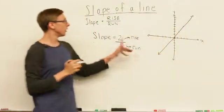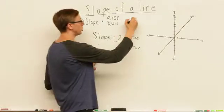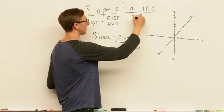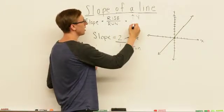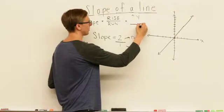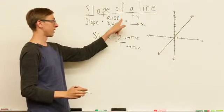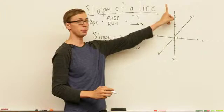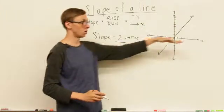So just remember that the rise is always how much you go up the Y and the run is how much you go across the X. So the top of the fraction is how much you go up and the run is how much you go across.